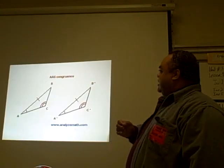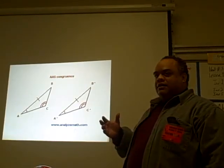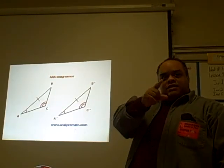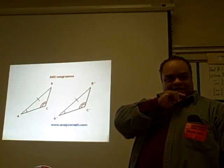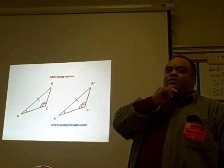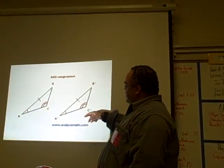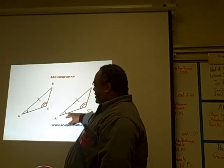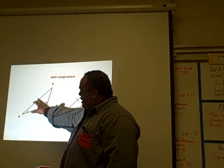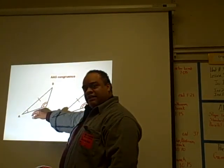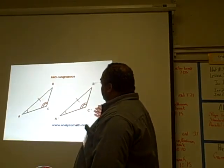The last one is AAS, which is angle, angle, side. You have two angles and a side. If you have that, then you have congruent triangles.